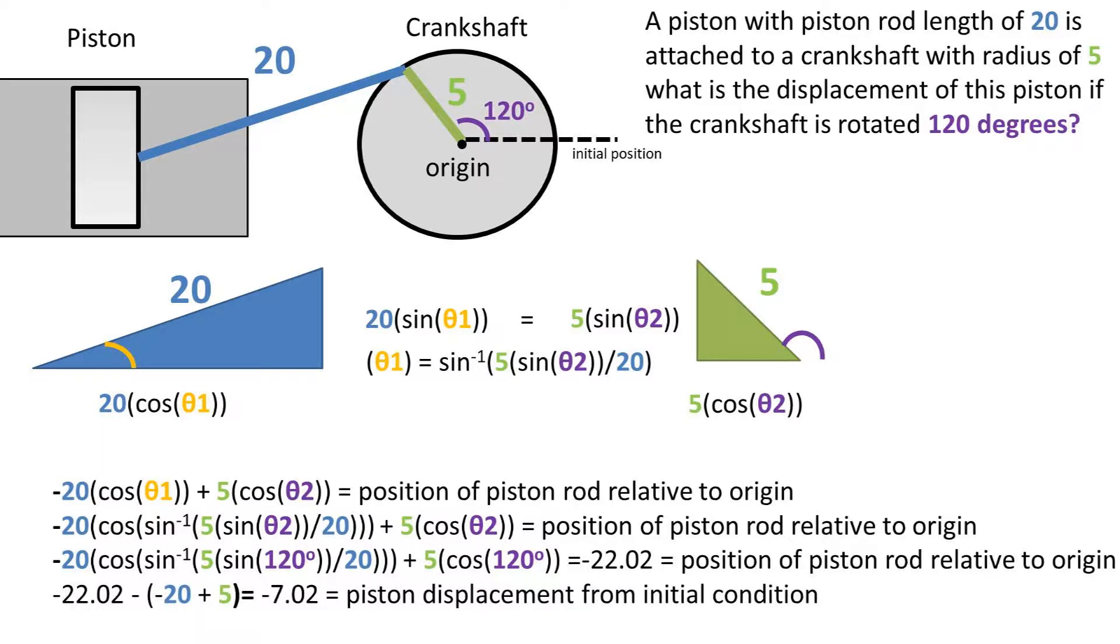Now to get the displacement, we can take the number we found and subtract the position of the piston at initial condition, which is negative 20 for the piston rod, because it is going leftward, plus the 5 radius of the crankshaft, because it is going rightward at initial position. We get a piston displacement of negative 7.02 units from initial condition.